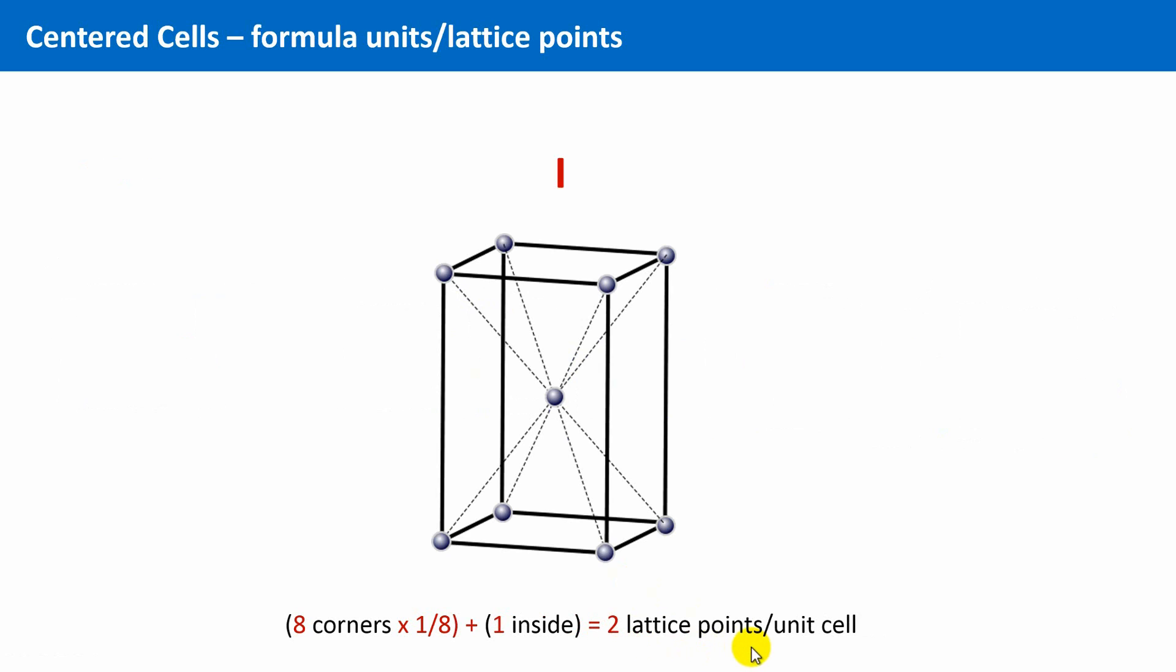Regarding the I centering, we have eight times one-eighth for the lattice points at the corner, and the additional lattice point inside the unit cell, in the center of the unit cell, which belongs only to one unit cell, so we have two lattice points or formula units per unit cell.